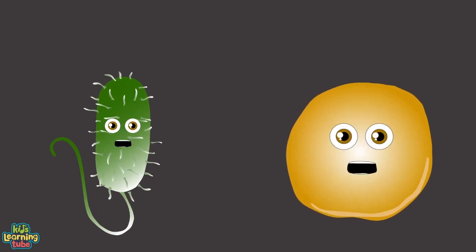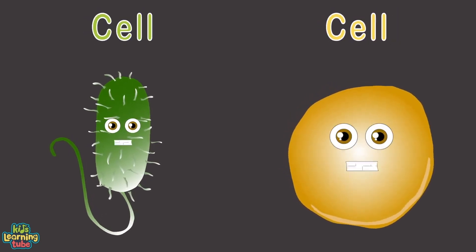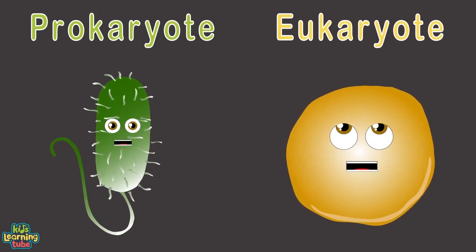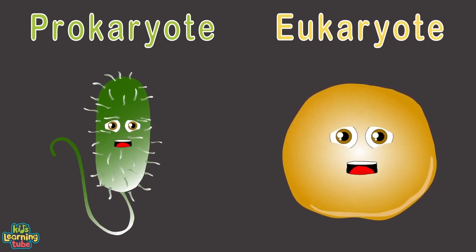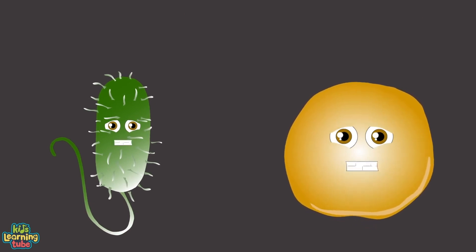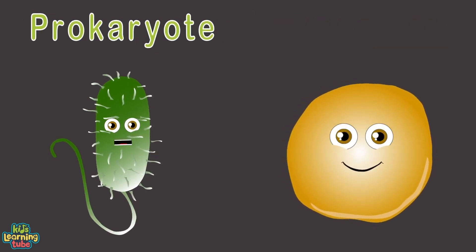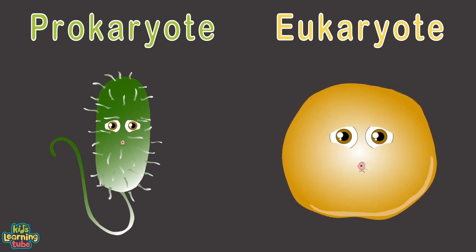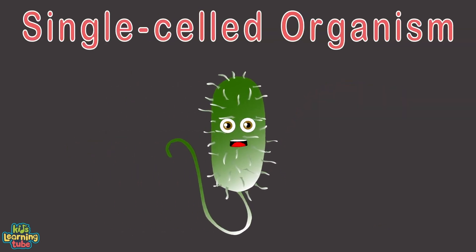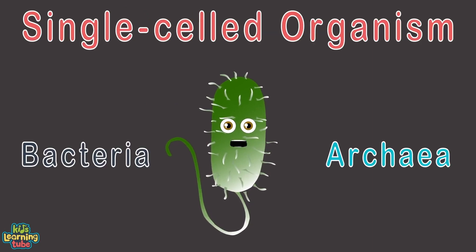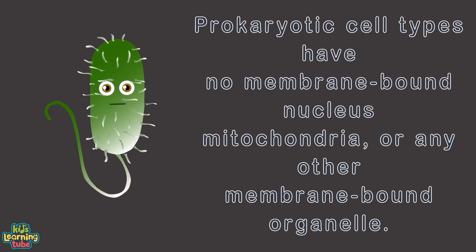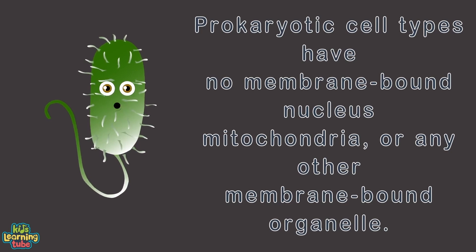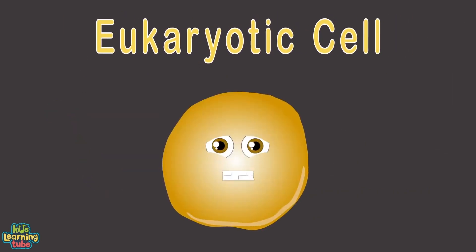Every living organism is made up of cells — there are trillions of cells. Prokaryotes and eukaryotes are the two main types of cells that these trillions of cells are categorized under. A prokaryotic cell type is a single-celled organism belonging to the domains Bacteria and Archaea. Prokaryotic cells have no membrane-bound nucleus, mitochondria, or any other membrane-bound organelles.